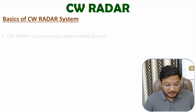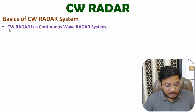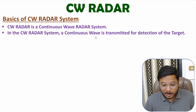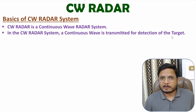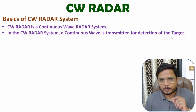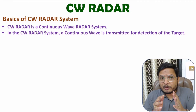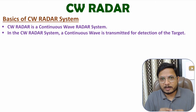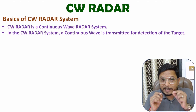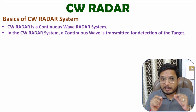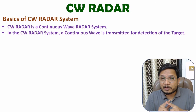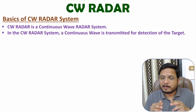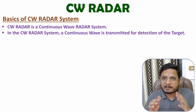CW means continuous wave. So with the use of CW radar system, we will be transmitting a continuous wave to identify a target. CW radar system is used to identify the motion of the target. If you want to identify the range of the target, you cannot use CW radar system — you will have to use a pulsed radar system.